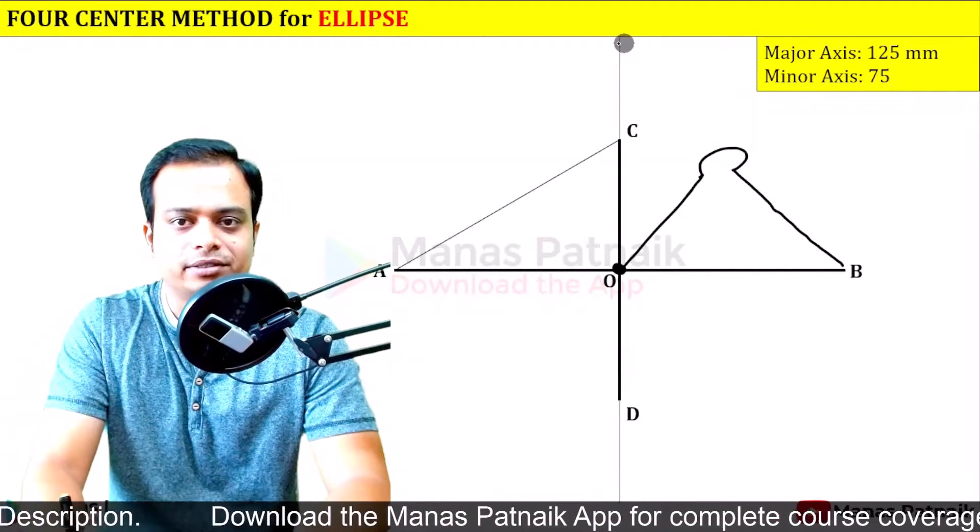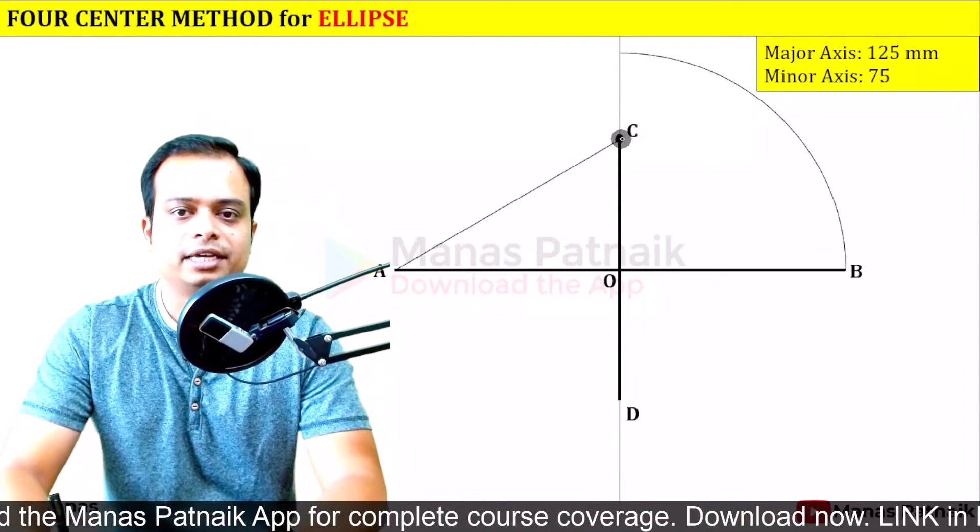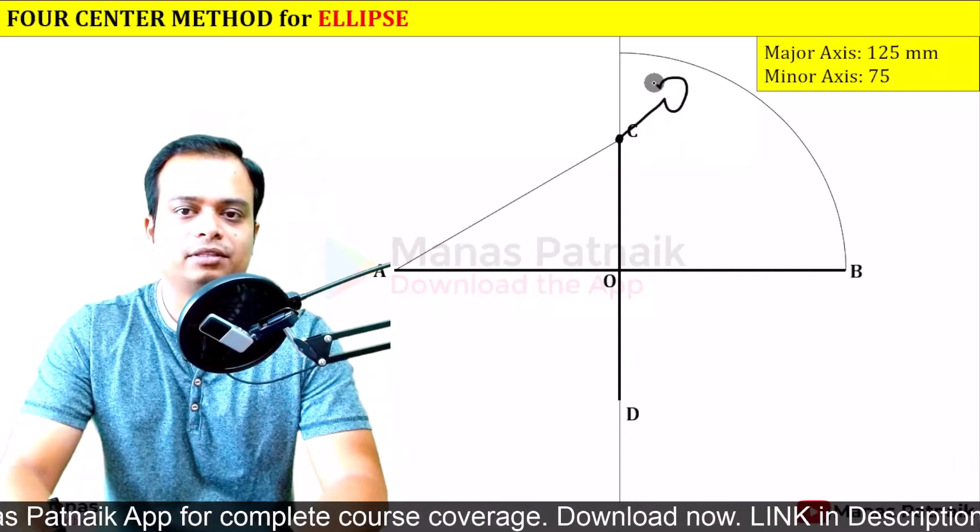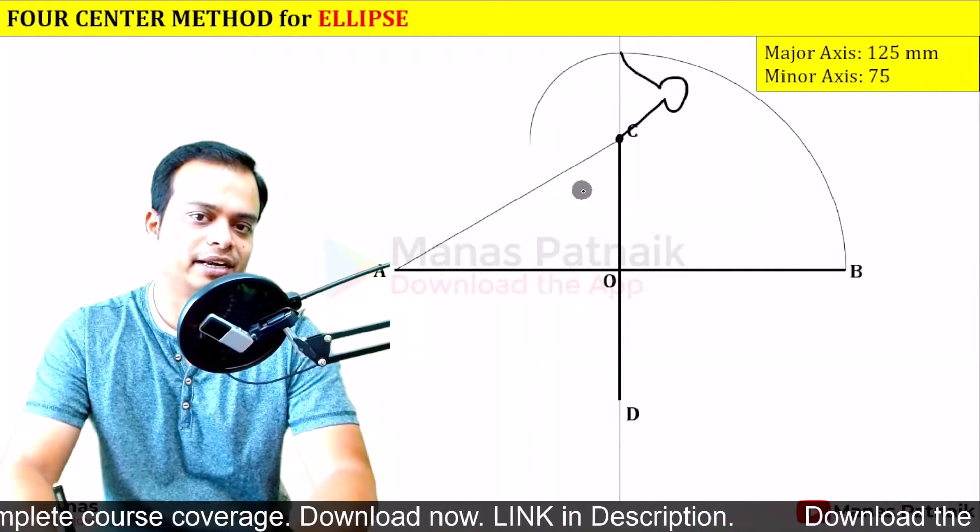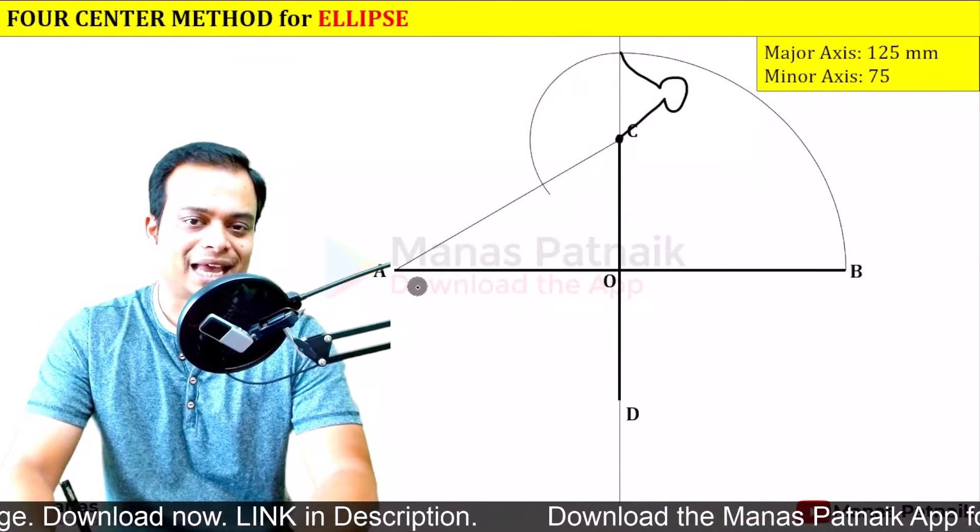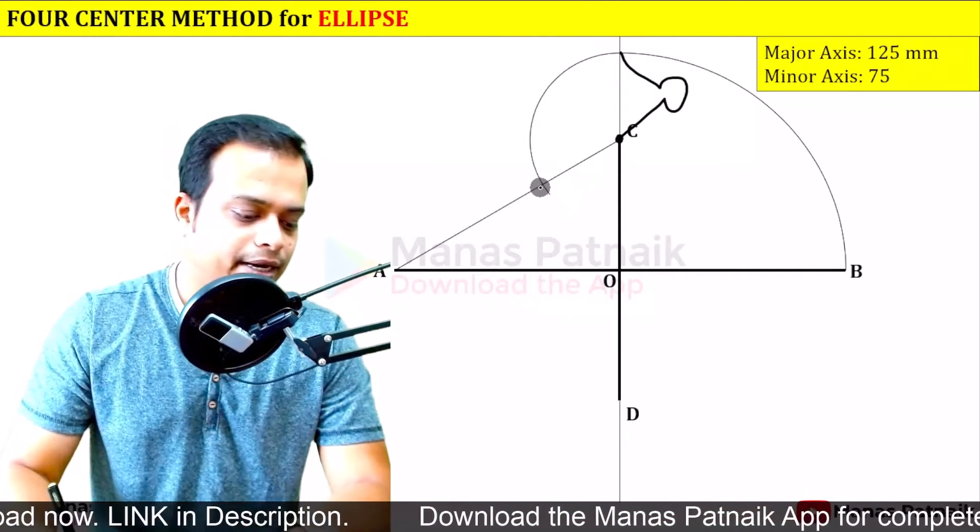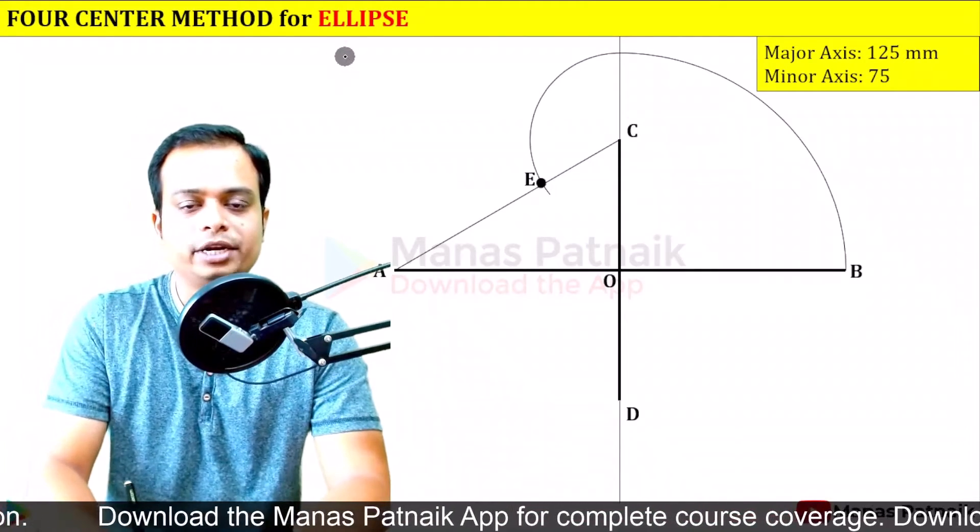Now with O as center and with OB as radius, rotate in the anticlockwise direction until you'll reach here. Done. So now with C as center and with this much as the radius, rotate again in the anticlockwise direction. You'll realize that this arc is going to intersect line AC somewhere here, and let's call this point, this very point, as E.